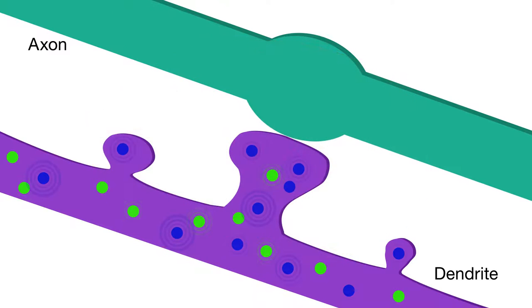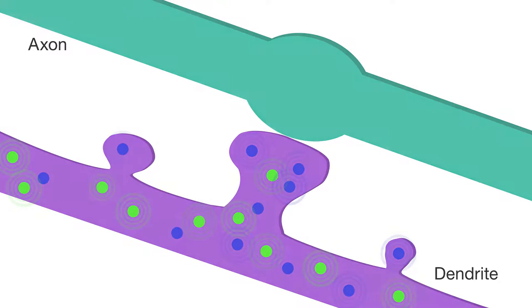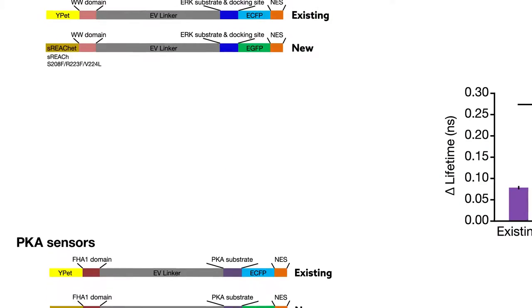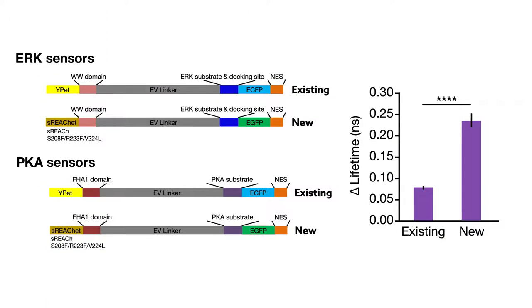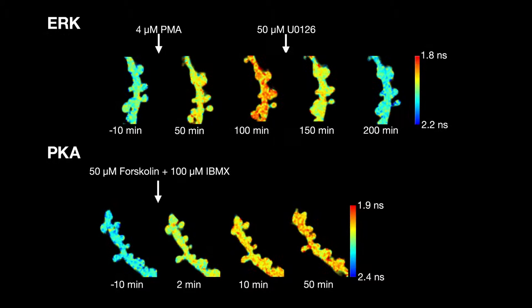But because the signals put out by existing ERK and PKA sensors were too weak to pick up in spines, scientists weren't sure how ERK and PKA activation is translated into memory-related changes in spine structure. To overcome this limitation, the researchers modified existing sensors so that they output three times more signal, making it possible to measure ERK and PKA activation within single spines.